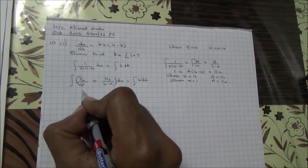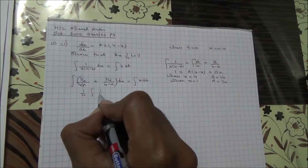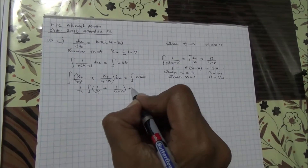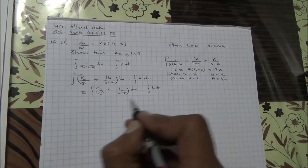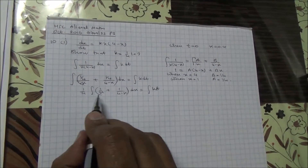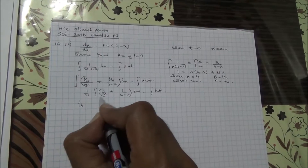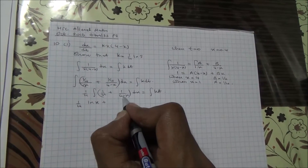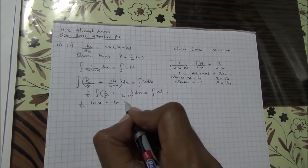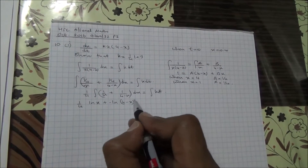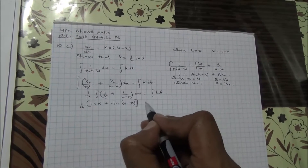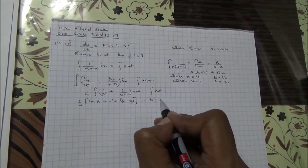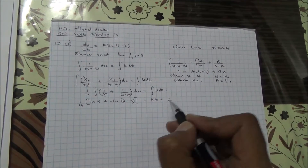Therefore, ¼ can come out: integral of 1/x plus 1/(4 - x) with respect to x equals the integral of k dt. The integral of 1/x is ln x, and the integral of 1/(4 - x) is minus ln(4 - x). So we get ¼[ln x - ln(4 - x)] = kt + c.